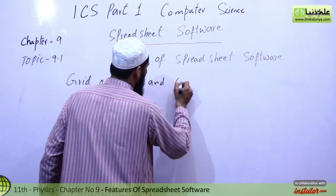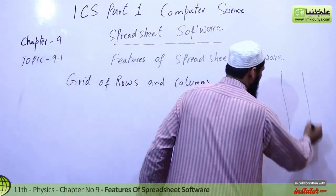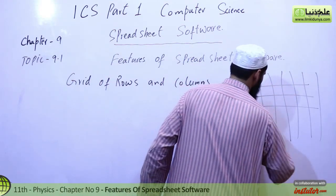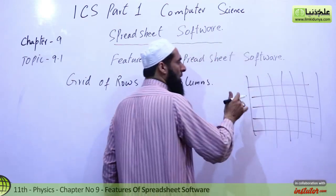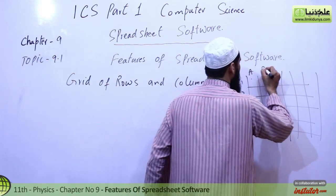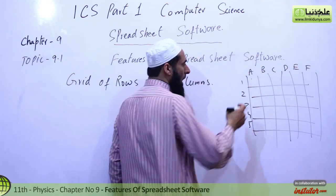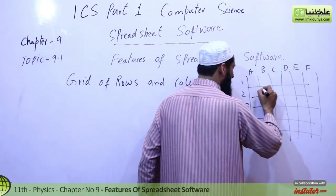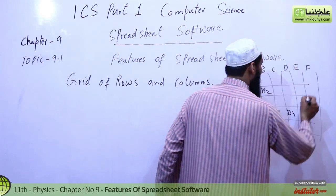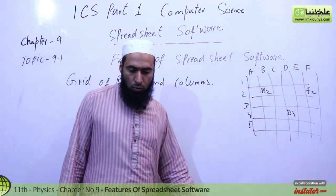This is an easy thing, you have seen it before. I want to explain that this grid of rows is made — this is rows and this is column. In Excel and Lotus, columns are arranged as A, B, C, D, E, F and so on. Now if you have any cell name, it will be B2, or this cell name is D4, or this cell name is F2.